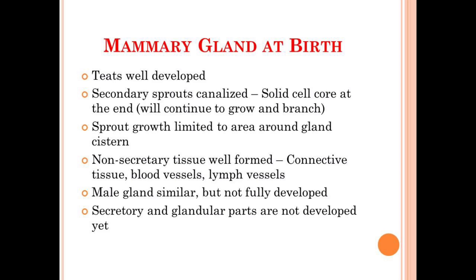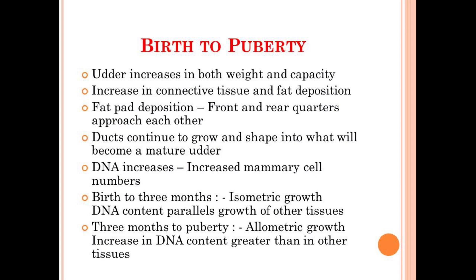These structures are well developed in the female animal but not fully developed in the male. From birth to the puberty of a female animal, the udder will increase in both weight and capacity. The udder will also increase in the amount of connective tissue and fat. Fat pad deposition will occur around the front and rear quarters, which will approach each other. These fat pads are adipose tissues that accumulate and help in the increment of the udder's size. The duct system and its network will continue to grow and give the udder a shape resembling a mature one.